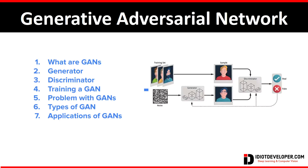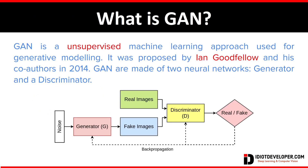Hello everyone, welcome to this video. In this video we are going to learn about an important deep neural network called Generative Adversarial Network. We will look into its architecture, understand how GAN works and different types of GAN, and finally see a few applications of GAN. GAN, or Generative Adversarial Networks, were introduced in 2014 by Ian Goodfellow and his team as an unsupervised machine learning approach for generative modeling.